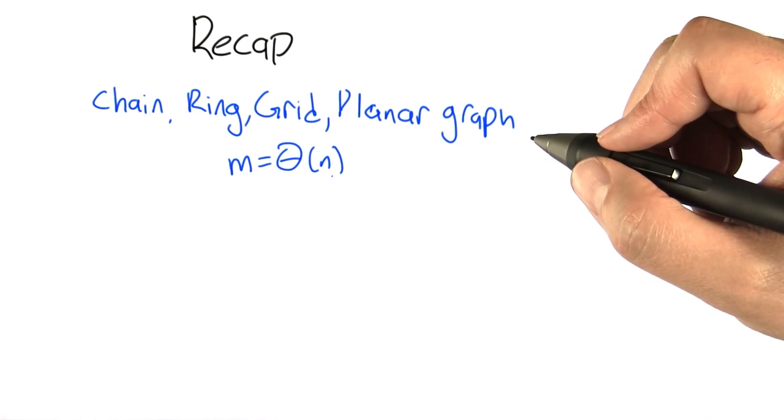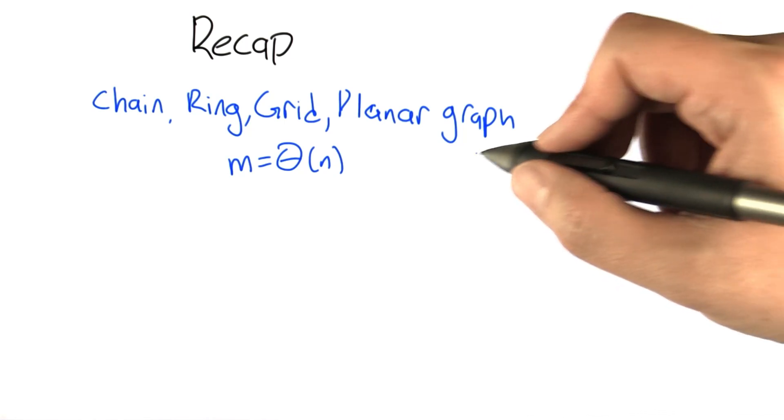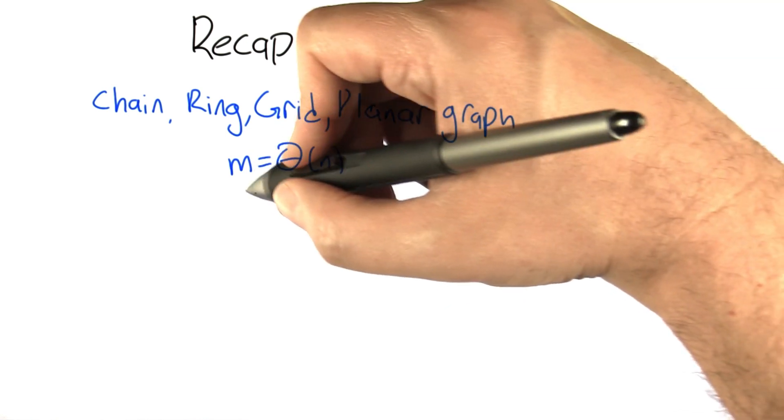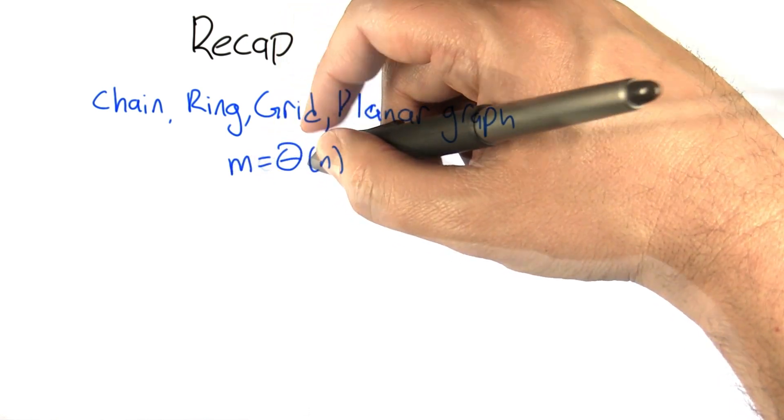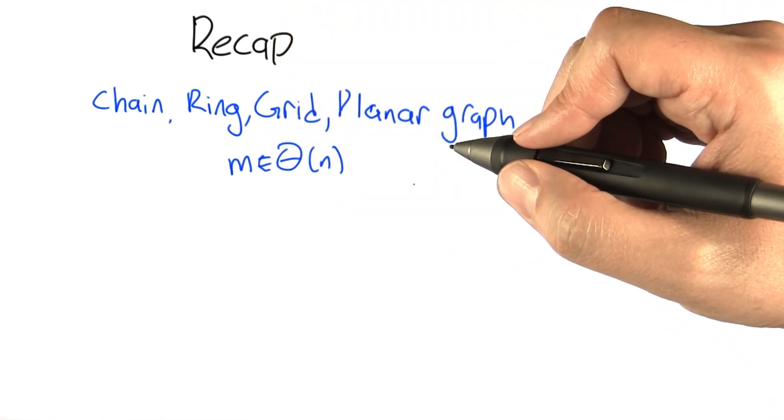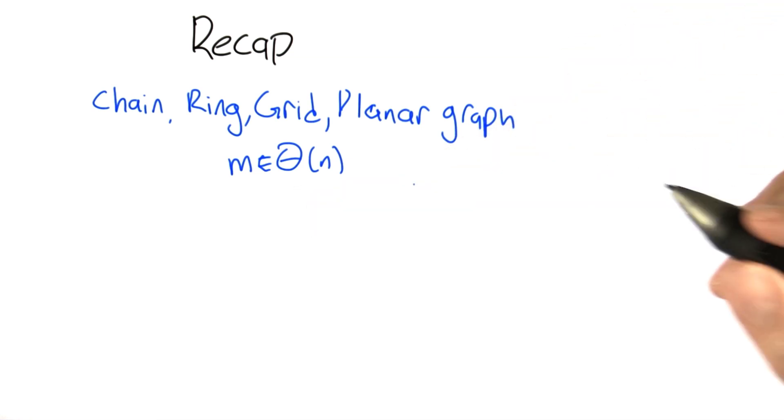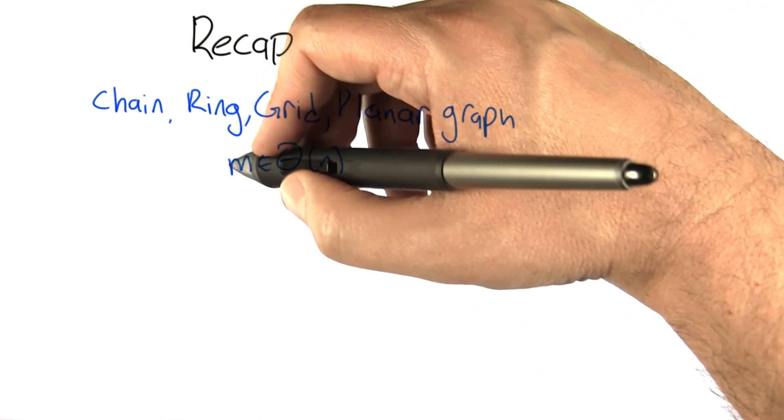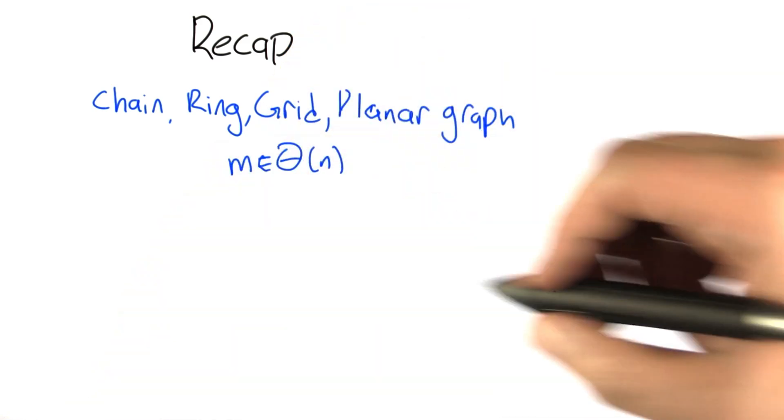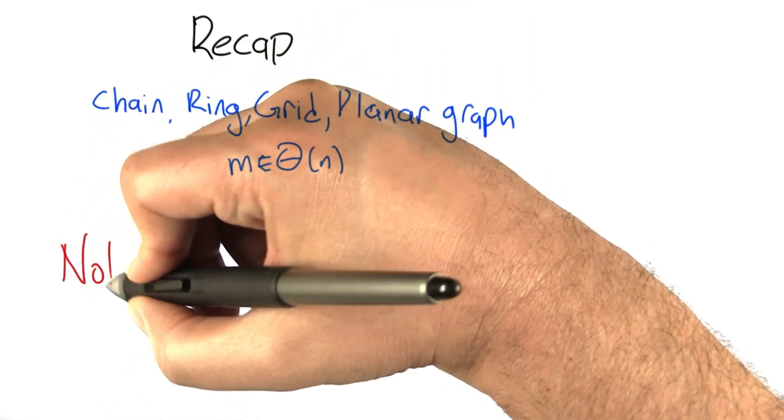What we've seen so far, we've analyzed a bunch of different families of graphs and we've found that for all these examples, the number of edges is like theta of n. It grows linear with the number of edges. You might wonder at this point, is that all there is in life? Is it always the case that the number of edges grows linearly with the number of nodes? The answer, of course, is no.